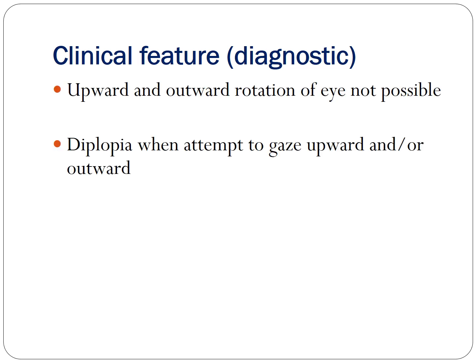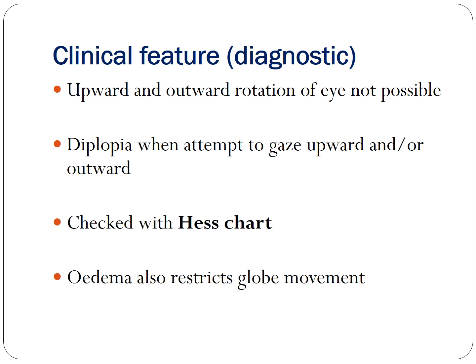Clinical diagnosis of orbital blowout fracture: upward and outward rotation of the eyeball is not possible because the inferior rectus and inferior oblique muscles are entrapped (incarcerated) in the fracture. This causes diplopia (double vision) when the patient attempts to gaze upward or outward, since the eyeballs are not moving synchronously. This is assessed using the Hess chart by an ophthalmologist, and the test must be repeated periodically as edema also restricts globe movement.